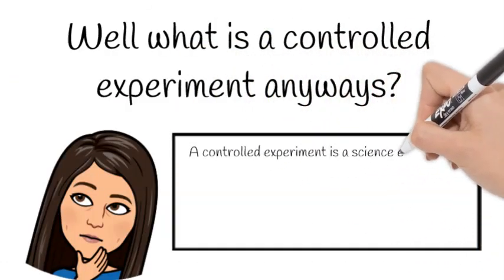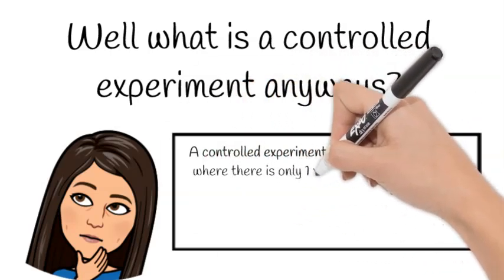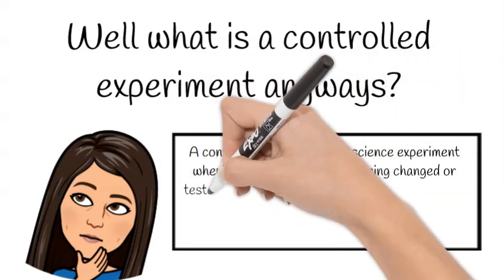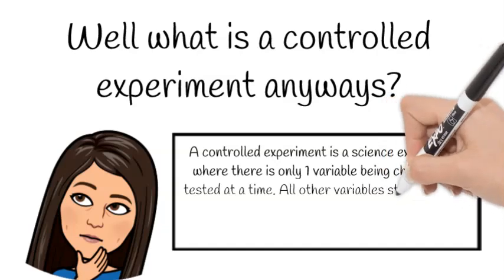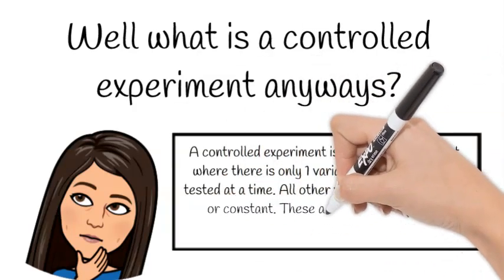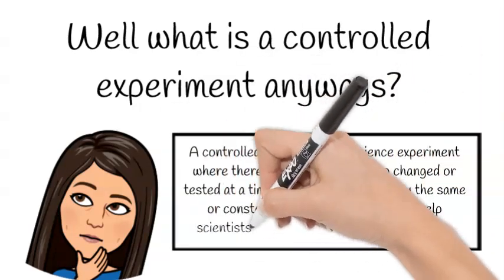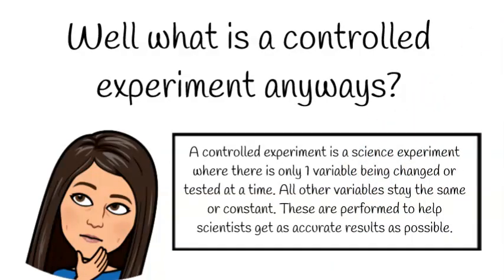Well, what is a controlled experiment anyways? A controlled experiment is a science experiment where there is only one variable being changed or tested at a time. All other variables stay the same or constant. These are performed to help scientists get as accurate results as possible.